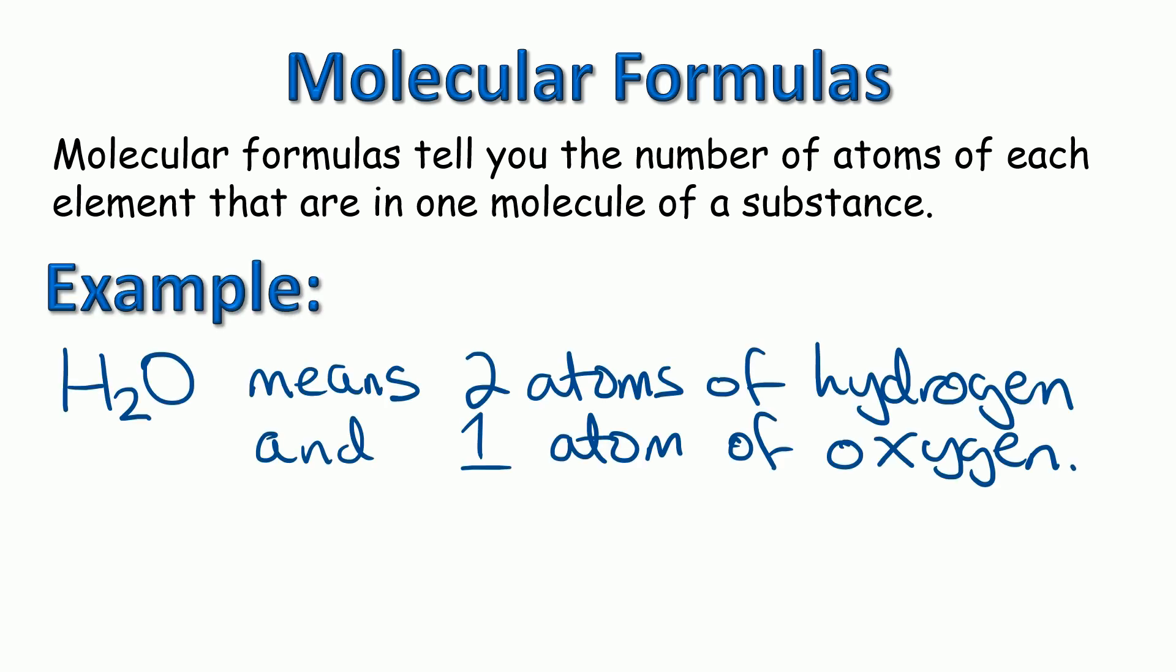So the first example is the one we all know, H2O, the formula for water, and this means there's two atoms of hydrogen, because there's a small two after hydrogen. Notice how the two is down at the bottom, not floating up at the top, and it also means there's one atom of oxygen. Now, you'll notice we don't put a little one after the oxygen. If there's no numbers after the letter, it means there's only one of it.